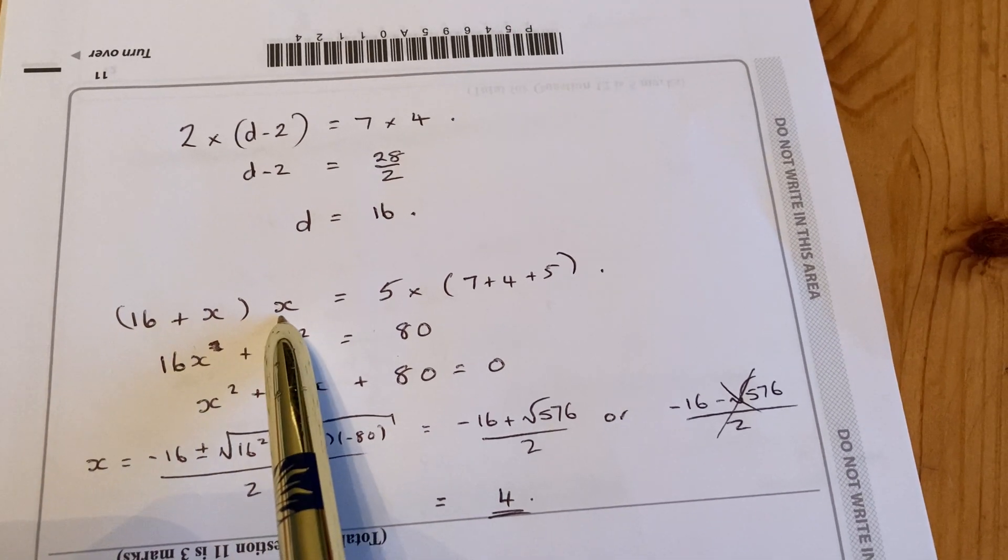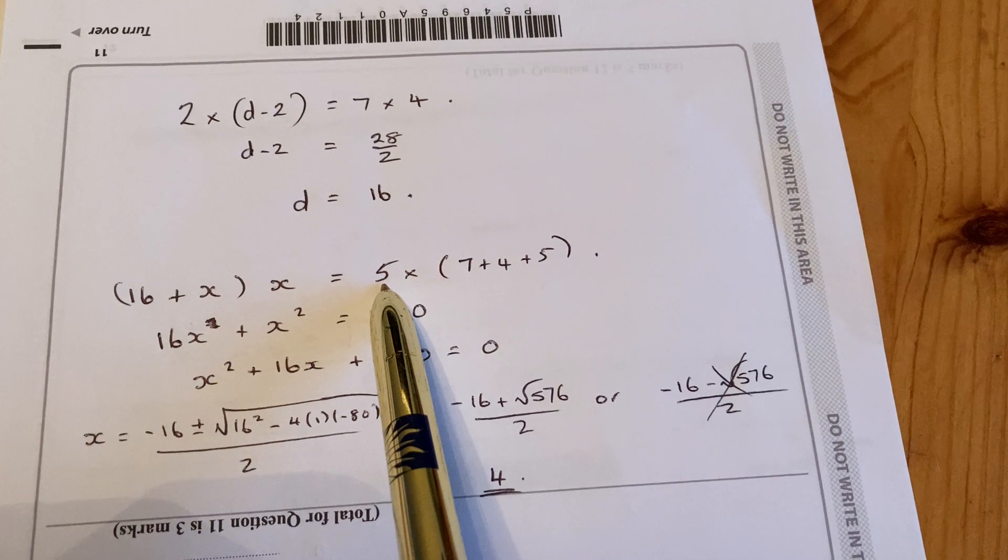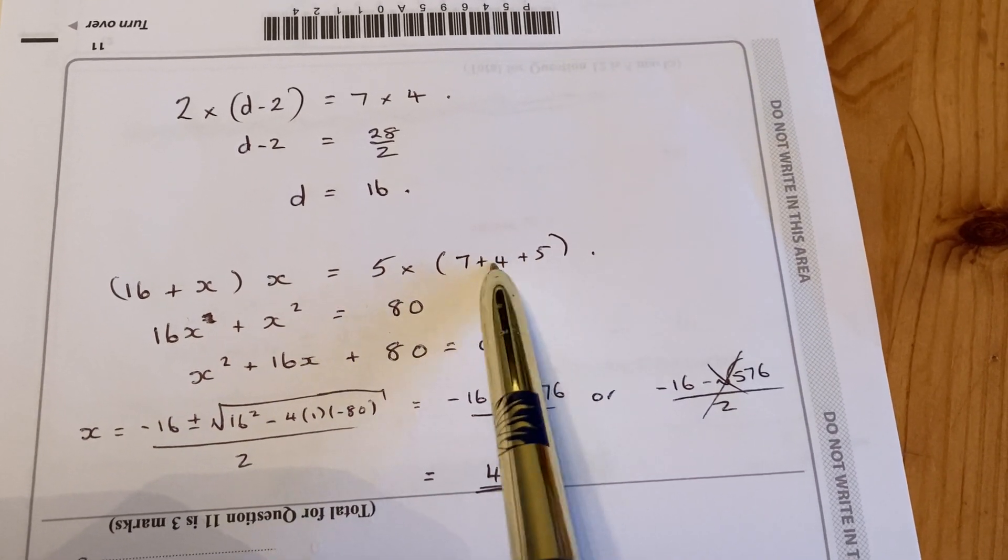The diameter plus x times by x, the bit outside, equals for the other line, 5 times 7 add 4 add 5, so 16 in there.